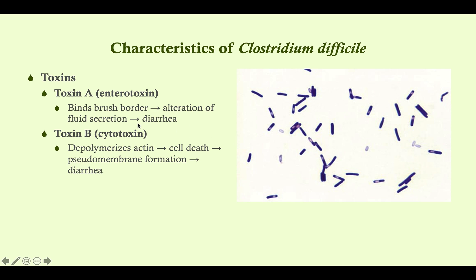C. diff has two toxins: Toxin A and Toxin B. Toxin A is the enterotoxin — it binds the brush border of the intestine, alters fluid secretion, and that causes diarrhea. Toxin B is more complicated: it gets into the cell, depolymerizes actin, and results in cell death. When you have cell death, it forms a pseudomembrane in the colon, which reduces the ability of the colon to absorb water and also results in diarrhea. So both toxins contribute to diarrhea.